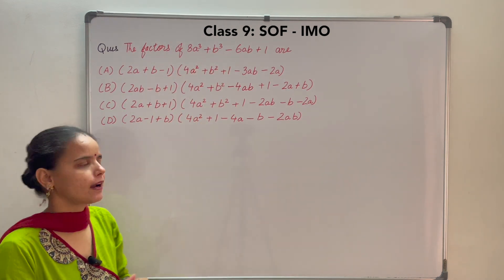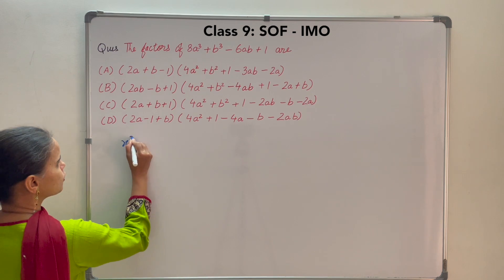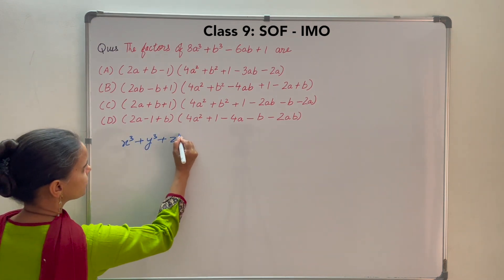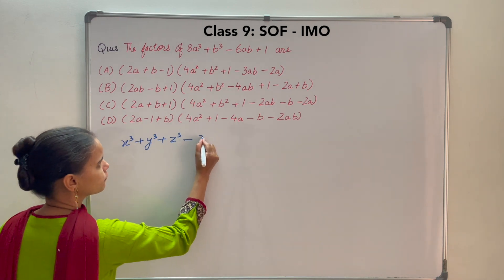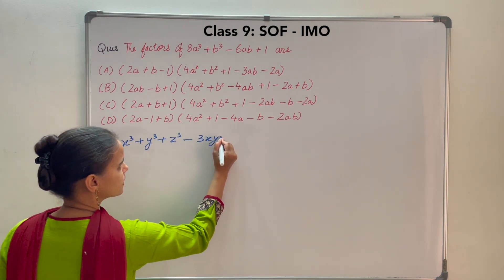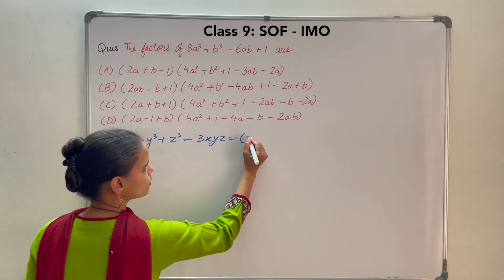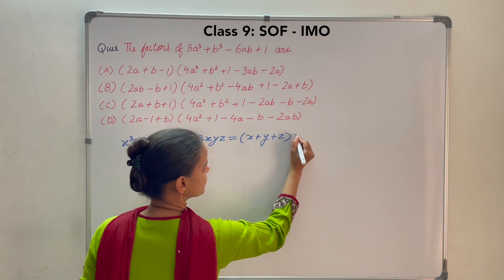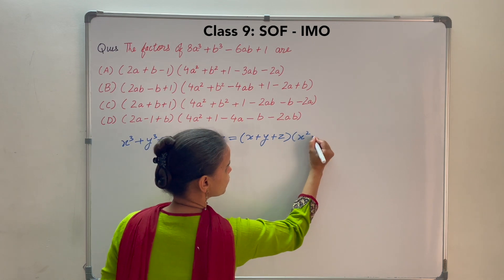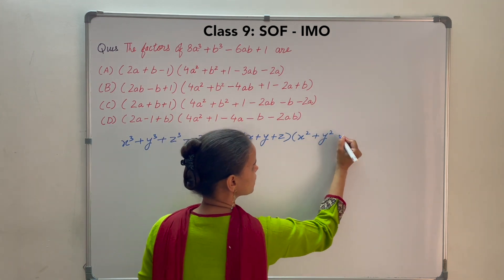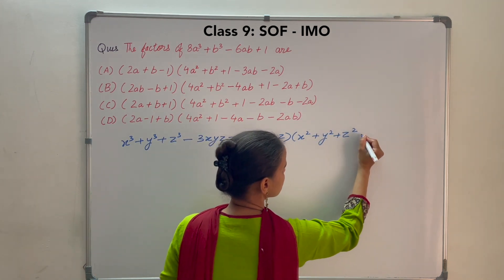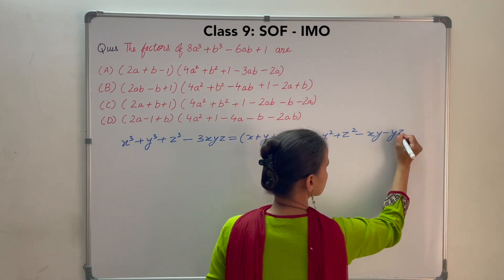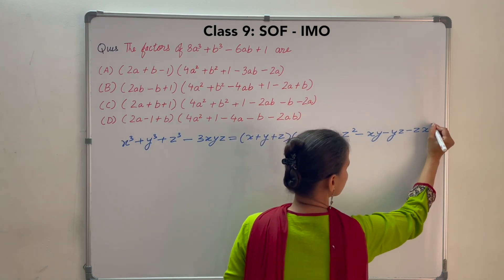This is similar to the identity: x cube plus y cube plus z cube minus 3xyz equals x plus y plus z into x square plus y square plus z square minus xy minus yz minus zx.